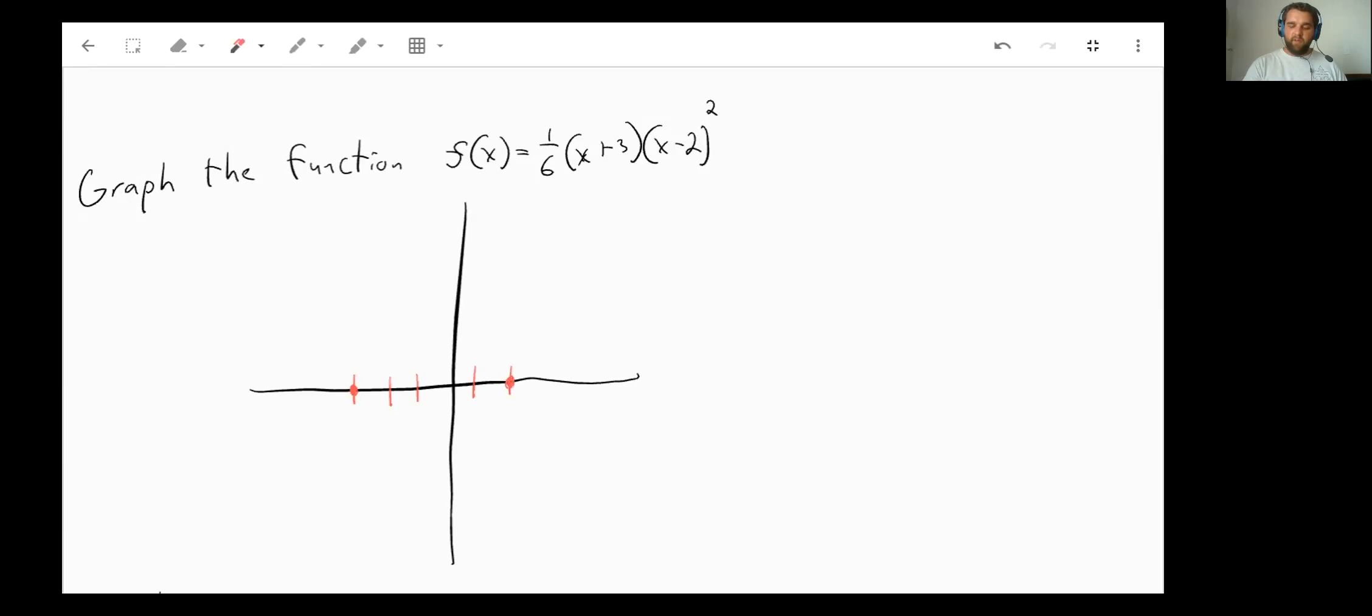Now, this is a repeating solution, so what happens when that's on your x-intercept is what's called a bounce. So that is the bounce point. Say this is coming down, it hits that point and immediately bounces back up. It doesn't cross, it just bounces.